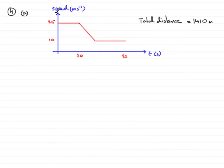In Question 4, Part A, we're asked to draw the speed-time graph for the motion of the car from A to B.